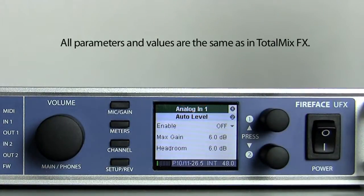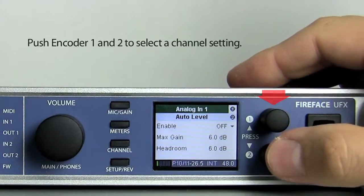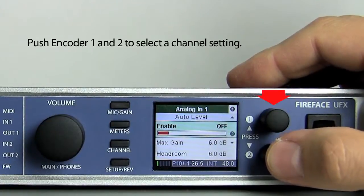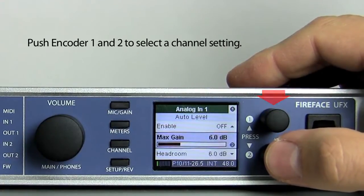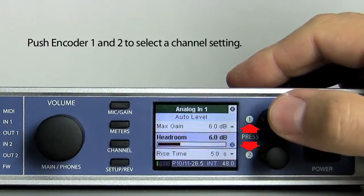All parameters and values are exactly the same as in the TotalMixFX software. By pushing encoder 1 and 2, the cursor moves up and down respectively, sliding vertically through the menu.